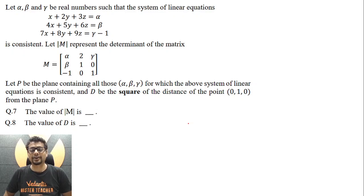Alpha, beta, gamma are some real numbers for which this system of linear equations is consistent. Determinant of M is basically a determinant of this matrix M. There is a plane P containing all the points alpha, beta, gamma, that means x equal to alpha, y equal to beta, z equal to gamma, for which this above system of linear equations is consistent. And D be the square of the distance of this point from this plane P. And we have been asked value of determinant of M and value of D.